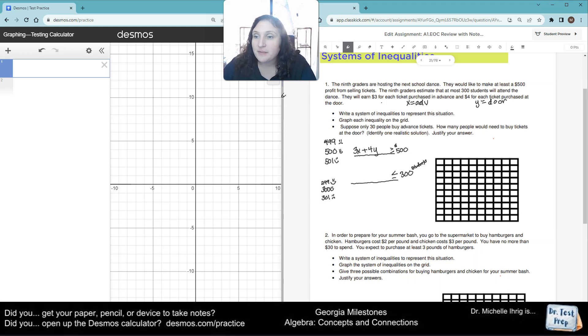Then it says, write a system of inequalities. And then we just have people. So X plus Y is our people. We don't have to do any multipliers because it's either people who bought advance tickets or people who didn't. So it says, write the system of equations. We just did.